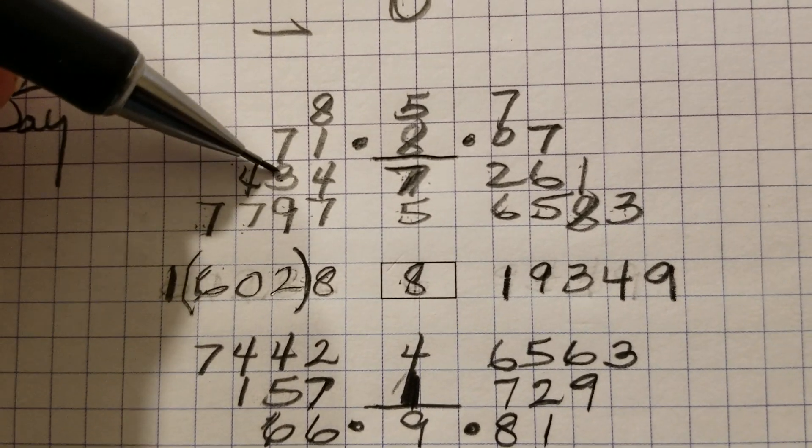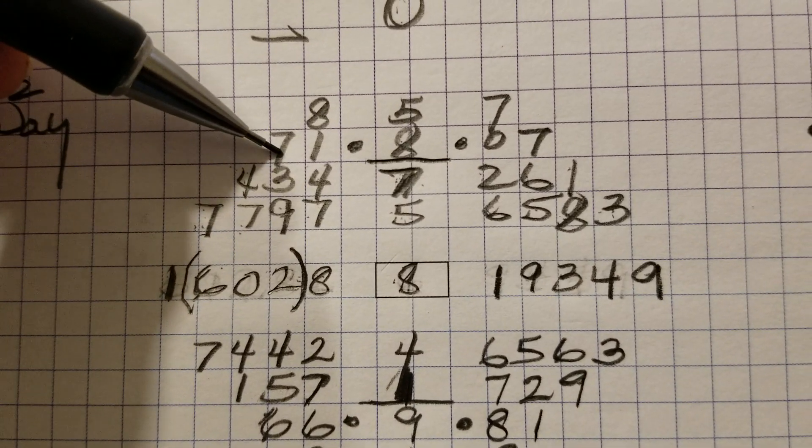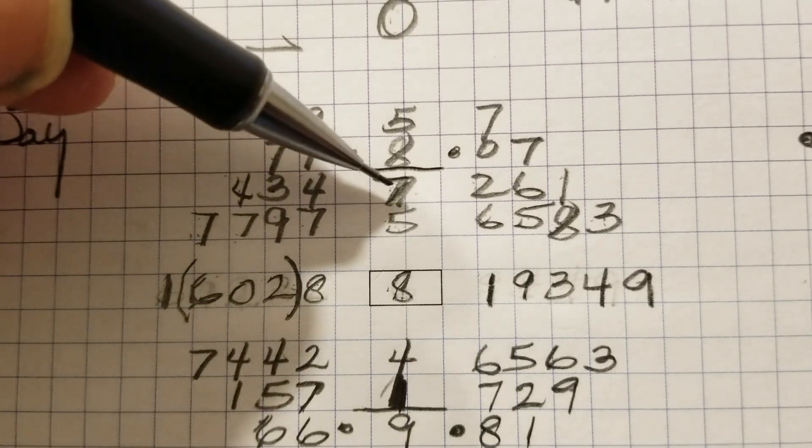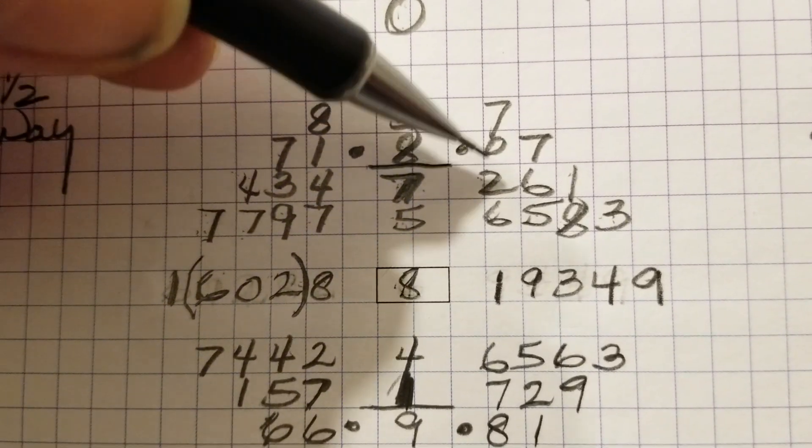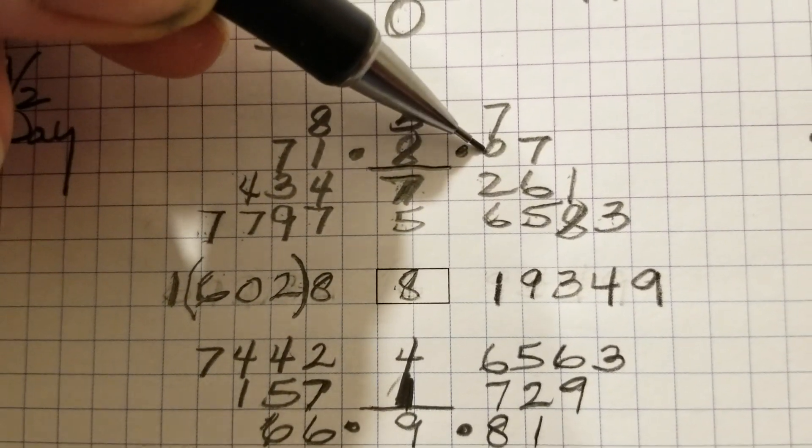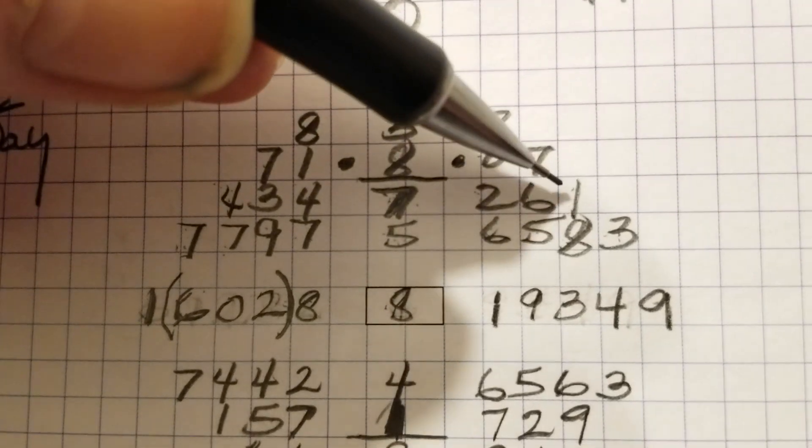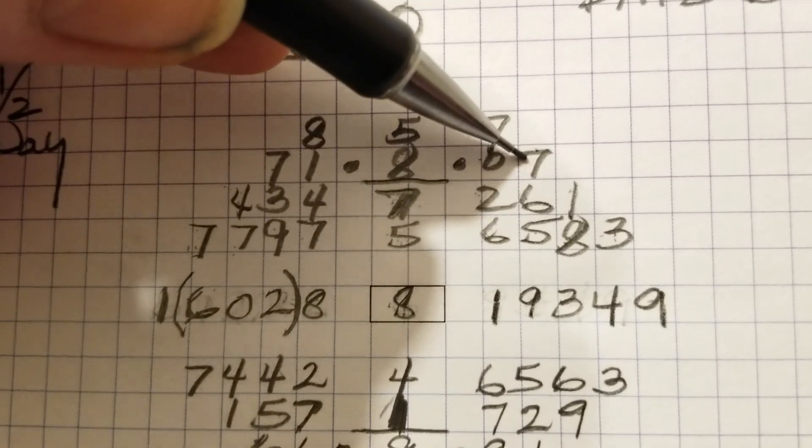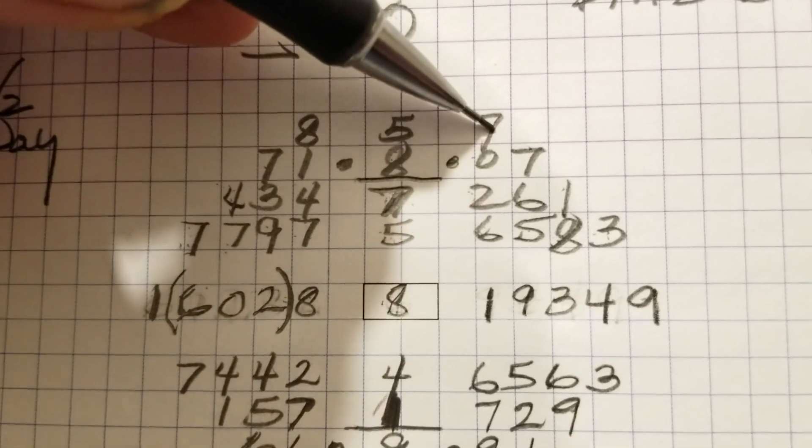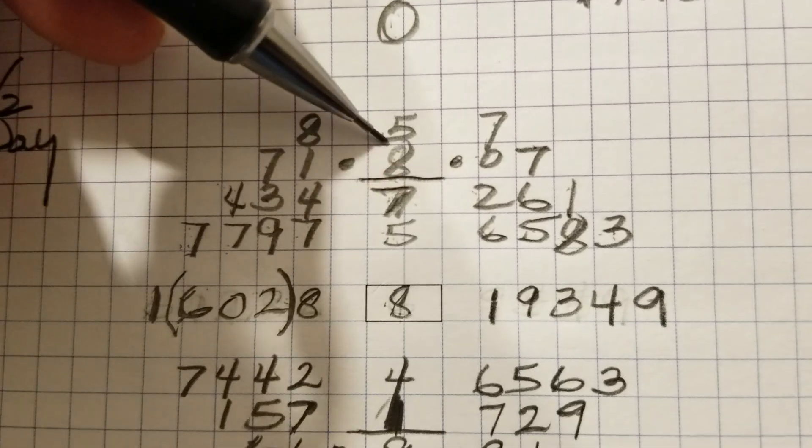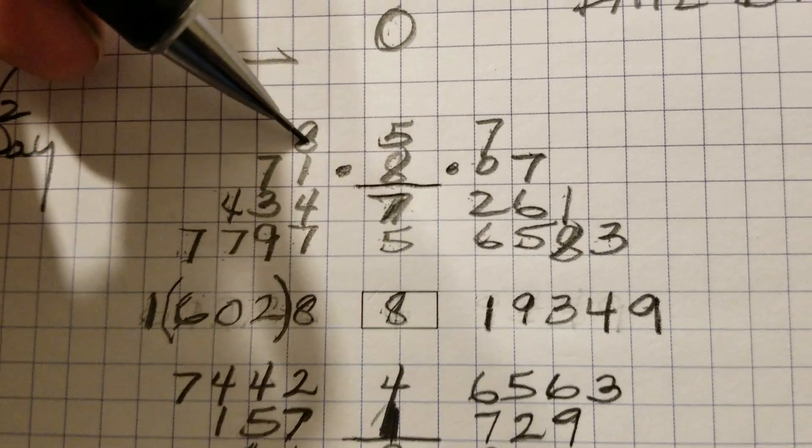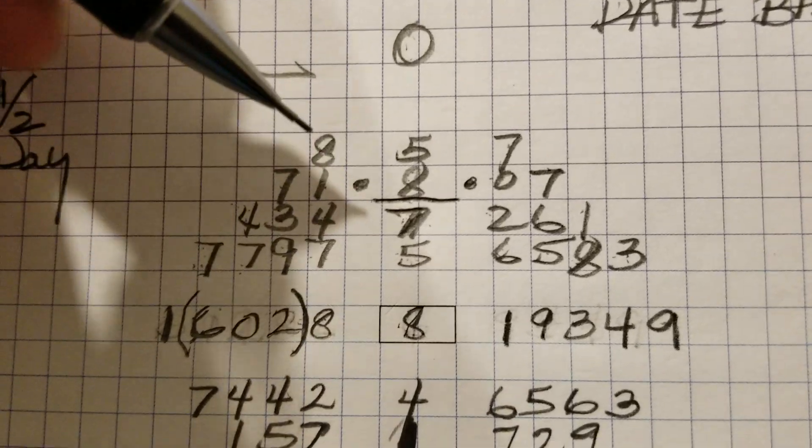And then 4 plus 3 is 7. 7 plus 4 is 11. 1 and 7 is 8. 8 and 2 is 10. Put the 0 there. Stop. 1 and 6 is 7. Complete that. And now we go up here. 7 plus 0 is 7. 7 and 8 is 15. Put the 5 there. And then we stop. 7, 1 is 8.